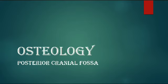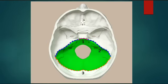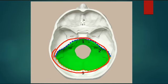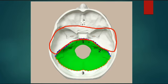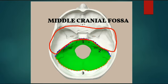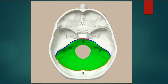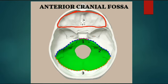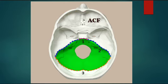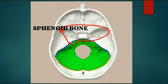Starting with the posterior cranial fossa - this green portion is your posterior cranial fossa, this is your middle cranial fossa, and the portion in front is your anterior cranial fossa. You can clearly demarcate anterior, middle, and posterior cranial fossa. This is your sphenoid bone, this is the body of the sphenoid, this is the lesser wing, and this is the greater wing.